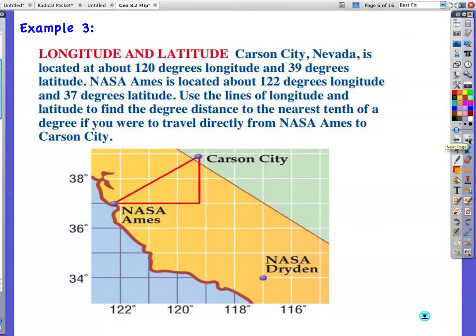Example 3. Okay, a story problem. We're going to have quite a few of these too. Carson City, Nevada is located at about 120 degrees longitude and 39 degrees latitude. NASA Ames is located at about 122 degrees longitude and 37 degrees latitude. Use the lines of longitude and latitude to find a degree distance to the nearest tenth of a degree if you were to travel directly from NASA Ames to Carson City. So we have Carson City is 120 degrees longitude which is going this way, so I'm going to write down that number right there. And then 39 degrees latitude.